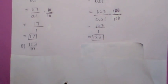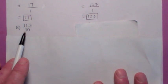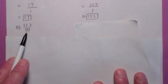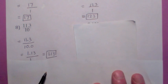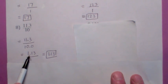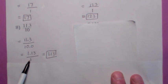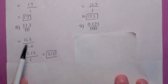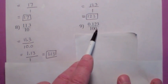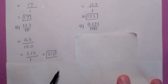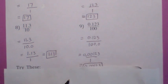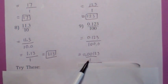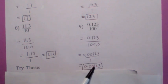Let's do a couple more. How would you divide 11.3 by 10? We're trying to make the bottom into a 1 — move the decimal over 1 to the left. Move the top 1 to the left as well. The bottom becomes a 1, and the answer is just 1.13. For the next one, move the decimal over 2 to the left to make the bottom a 1. Move the top over 2 to the left as well, and your final answer is 0.00123.